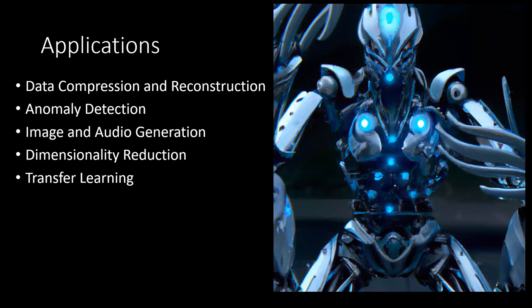There are many different applications of autoencoders. The first is data compression and reconstruction: autoencoders reduce the dimensions of input data into a smaller set of features capturing essential information, and the compressed representation can be reconstructed back with minimal loss. The second application is anomaly detection: autoencoders trained on normal data can detect anomalies — observations that deviate significantly from learned normal patterns — which is useful in fraud detection, cybersecurity, and medical diagnosis.